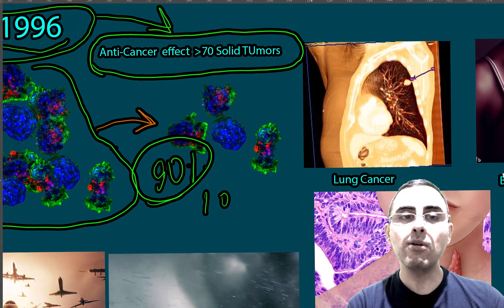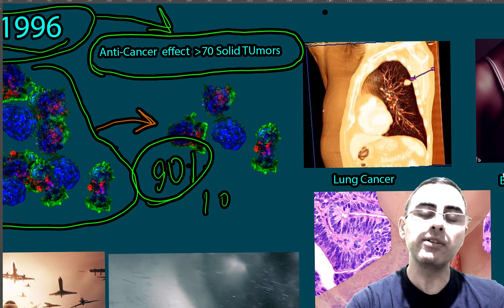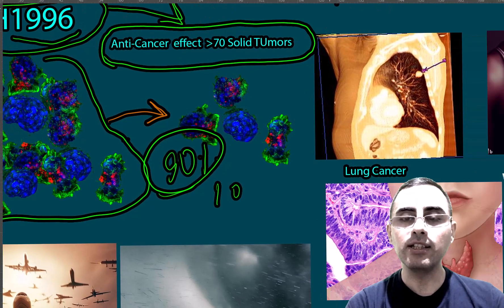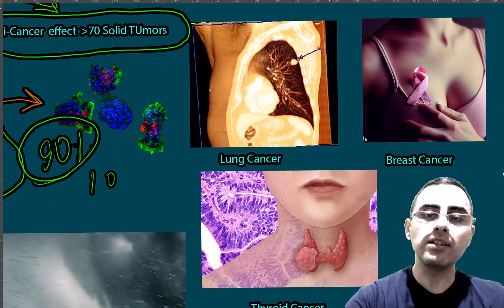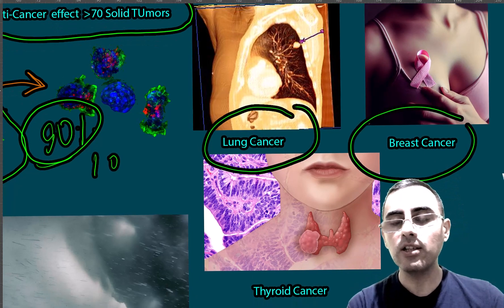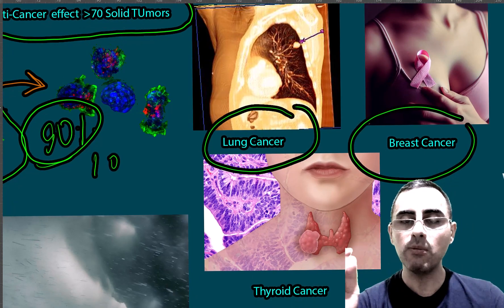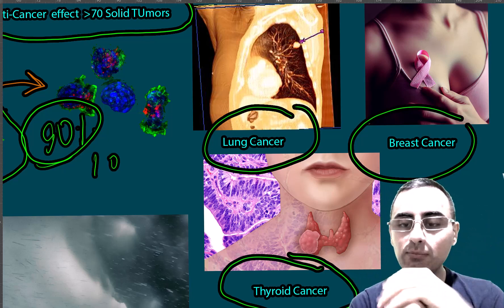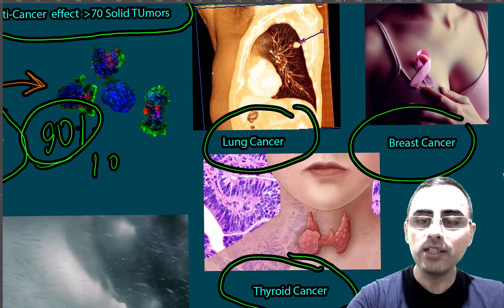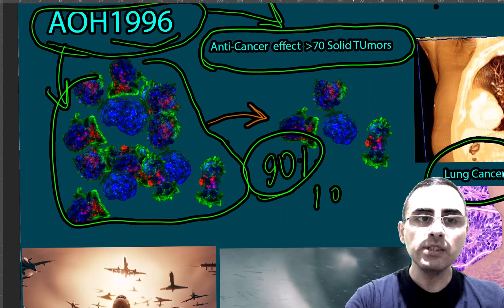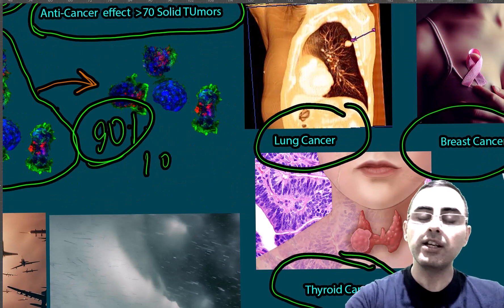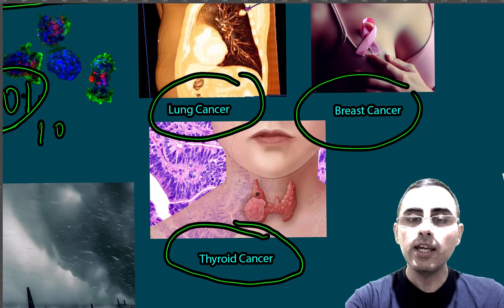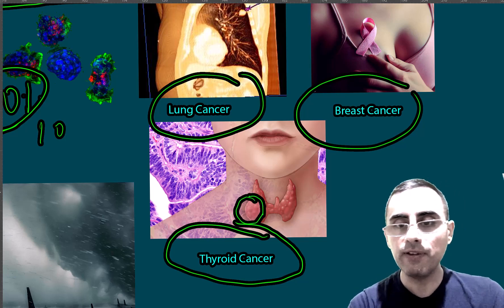We already have Phase 1 clinical studies and the results are already promising. AOH-1996 is effective against lung cancer, breast cancer, thyroid cancer, colon cancer, and many other common cancers. In animal studies, particularly in mice, AOH-1996 was more effective than conventional radioiodine therapy.